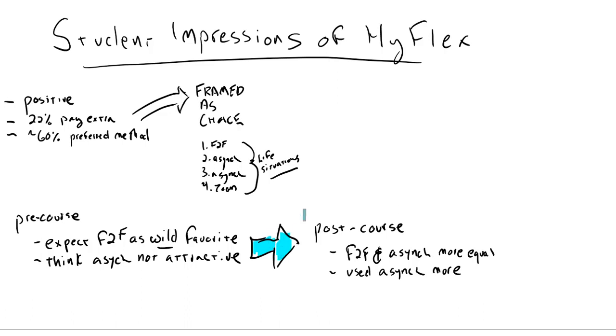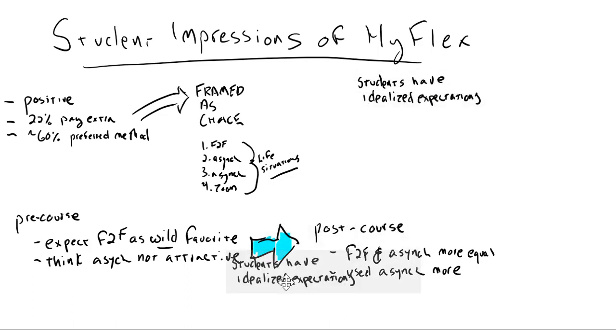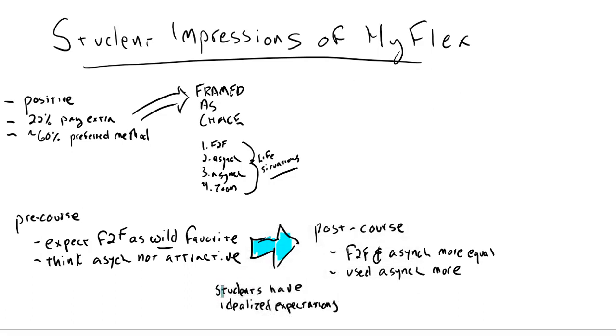And the question is why, I guess. Why did their perceptions shift? Why do they think face-to-face is going to be what they want and what they need? And then at the end, they're like, ah, I used async more. And the reason why is that students have idealized expectations of what their semester is going to be like at the beginning and what they're going to be able to do and the amount of time they're going to have and the flexibility and how things are going to work out. They have idealized expectations.